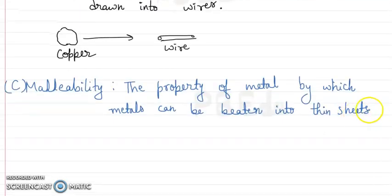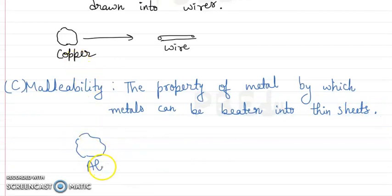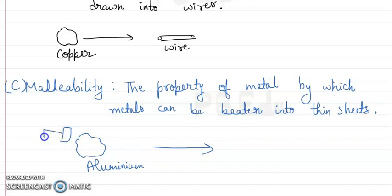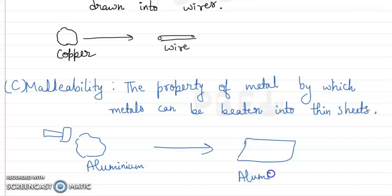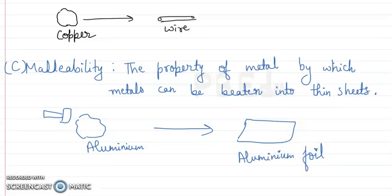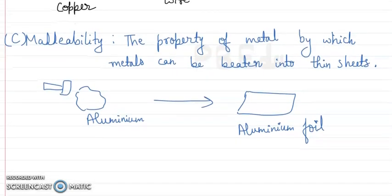For malleability, if we have aluminium metal obtained from metal ore and we beat it using a hammer or any strong object, we can convert it into thin sheets — like aluminium foil that we use to wrap our food items. Aluminium foil is a thin metal sheet formed by the property of malleability.